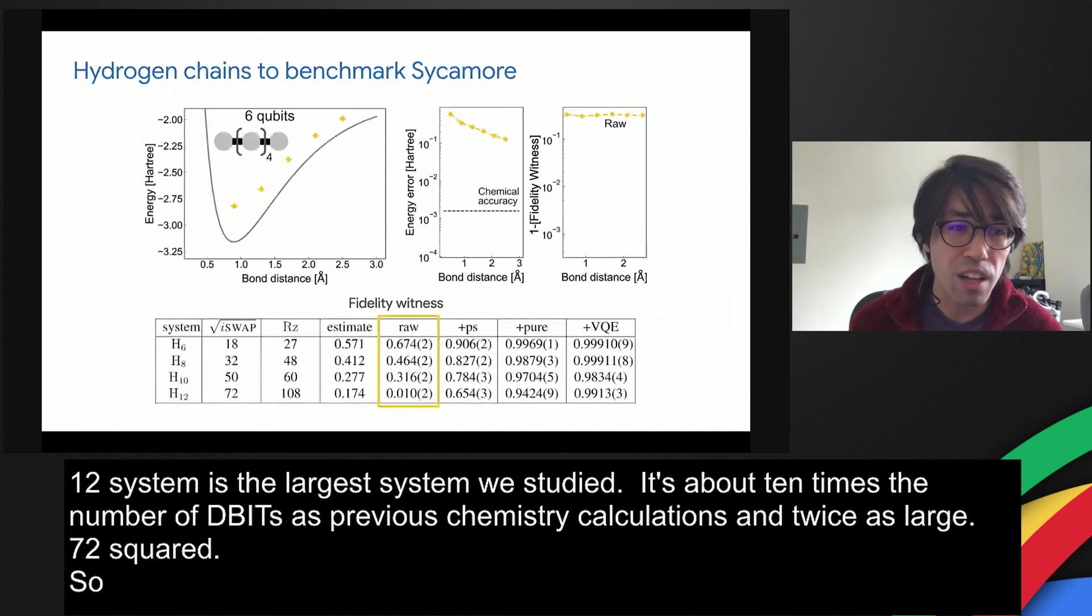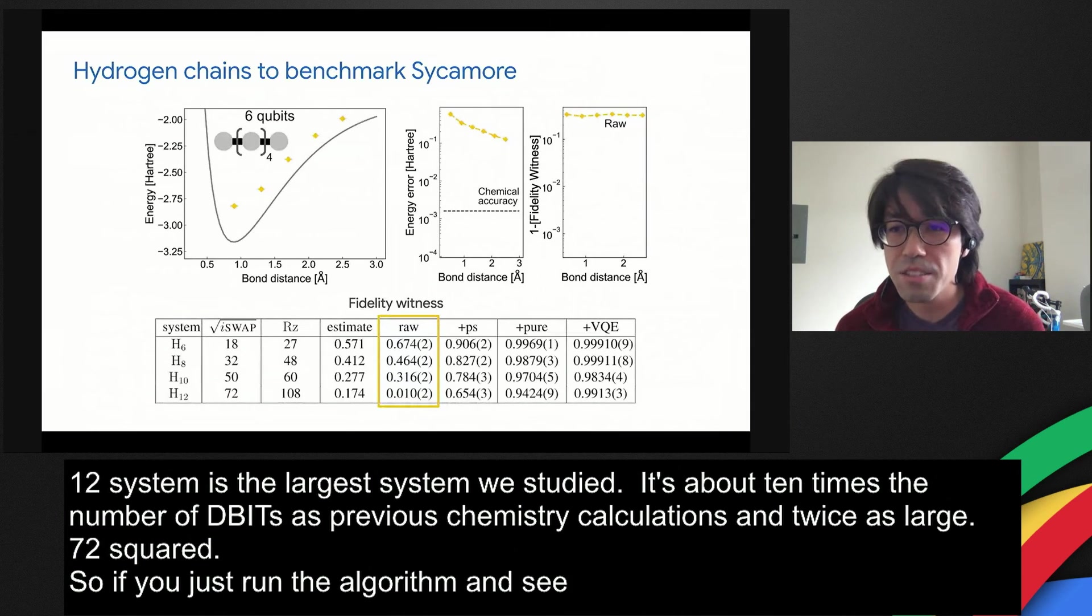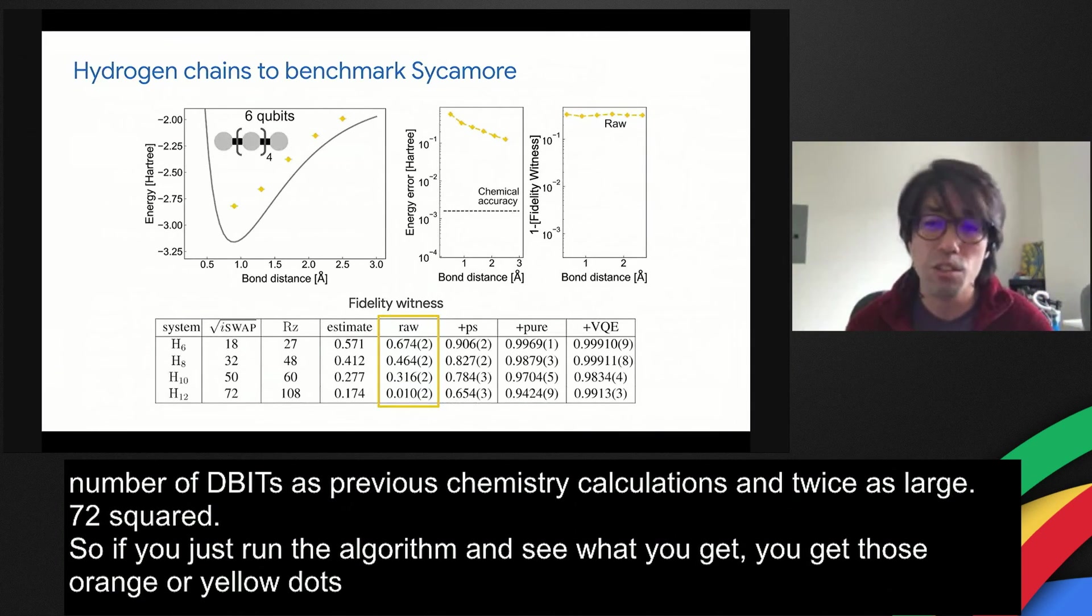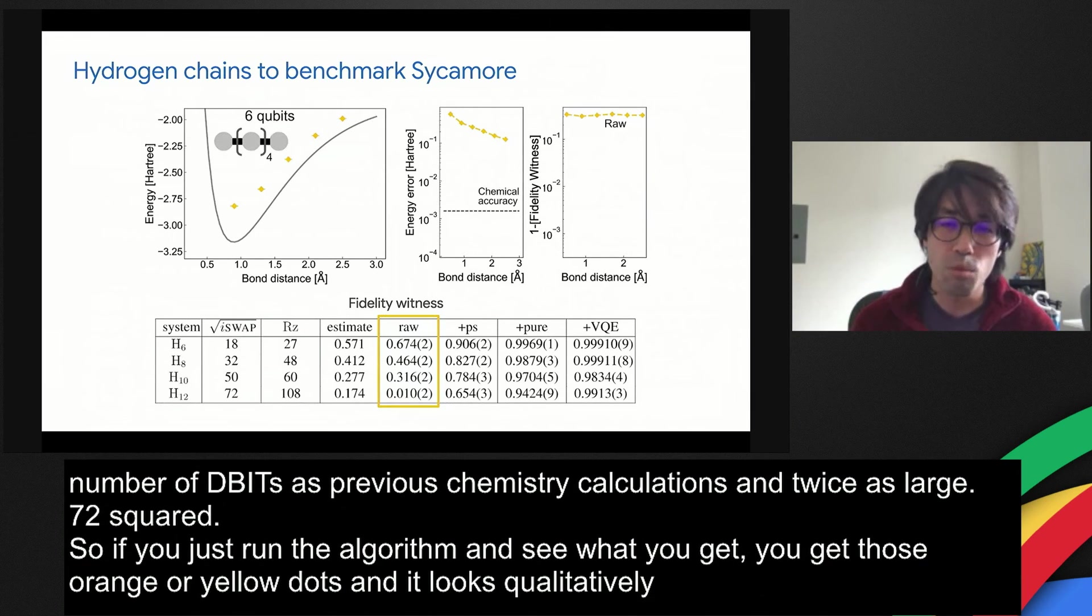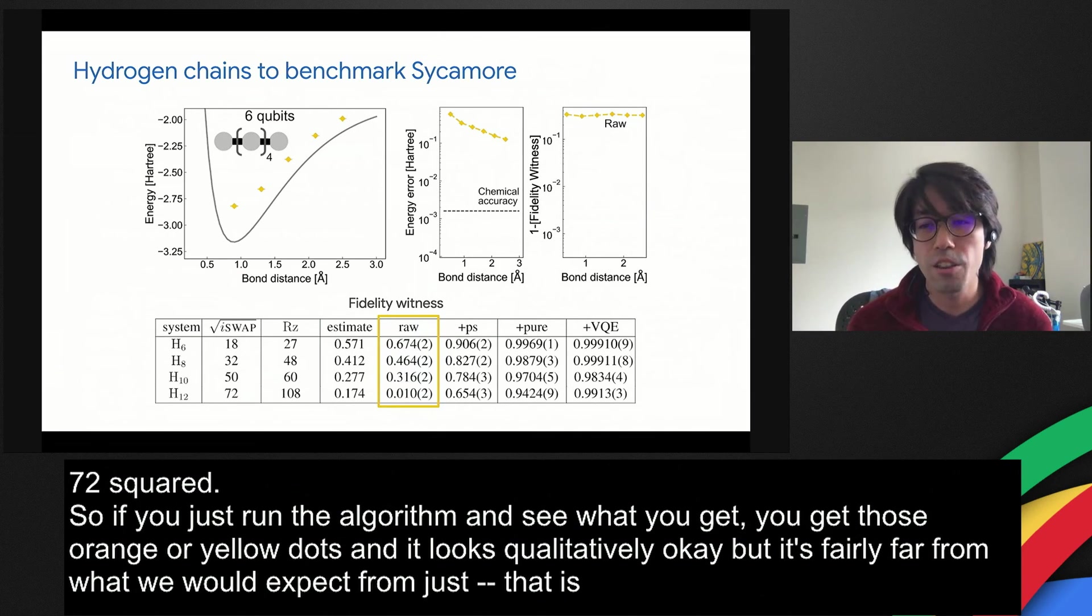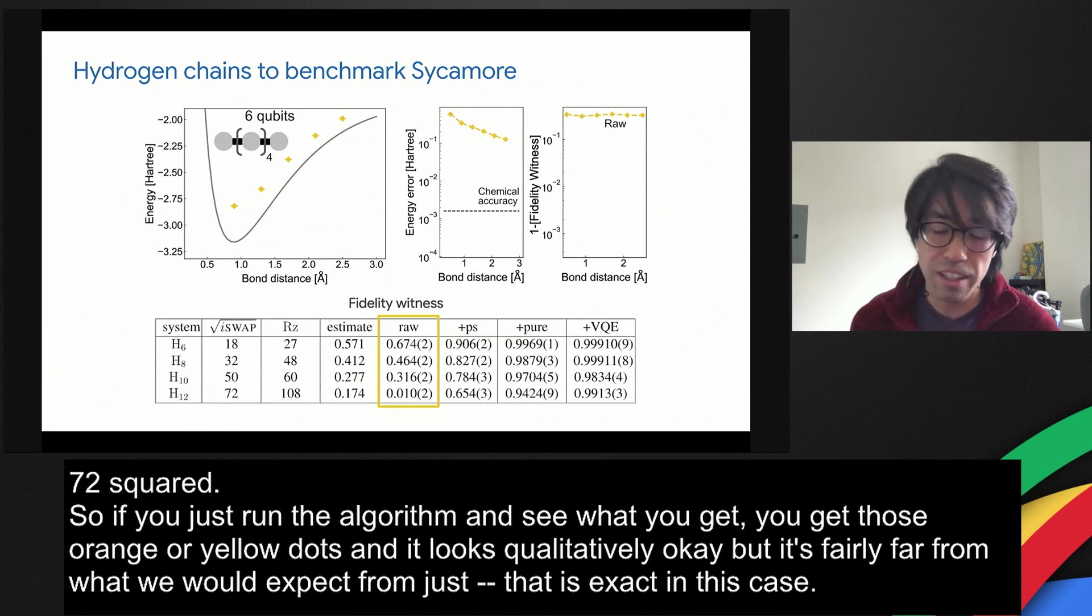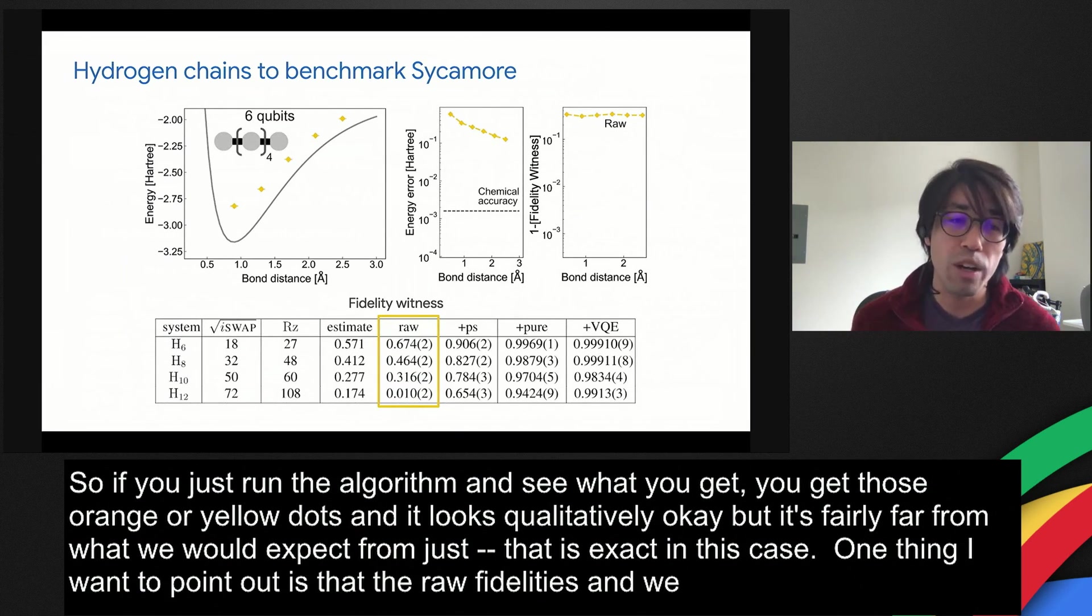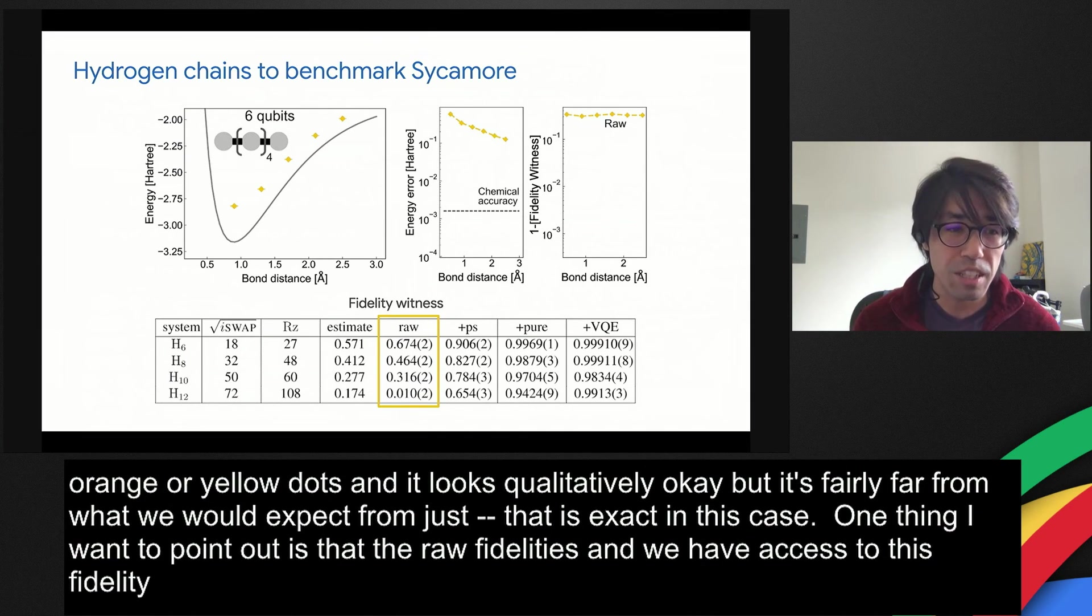If you just run the algorithm and see what you get, you get those orange or yellow dots. It looks qualitatively okay, but it's fairly far from what we would expect from just vanilla mean field theory. In this case, that is exact. One thing I want to point out is that the raw fidelities—we have access to this fidelity witness—look actually quite close to what you would get out of the supremacy experiment.